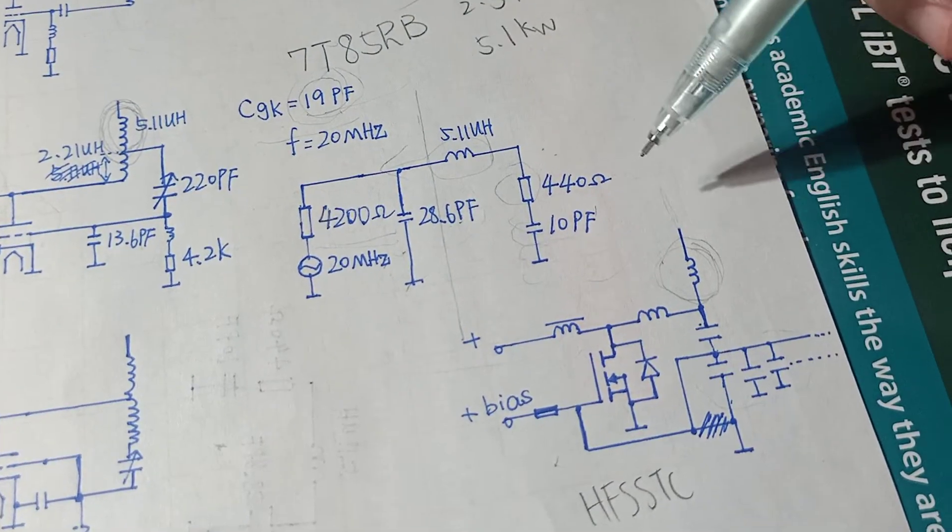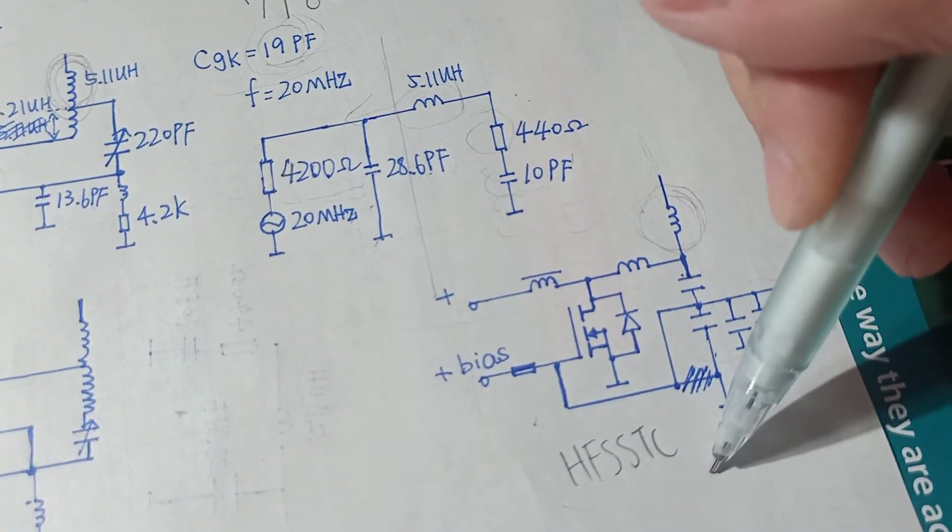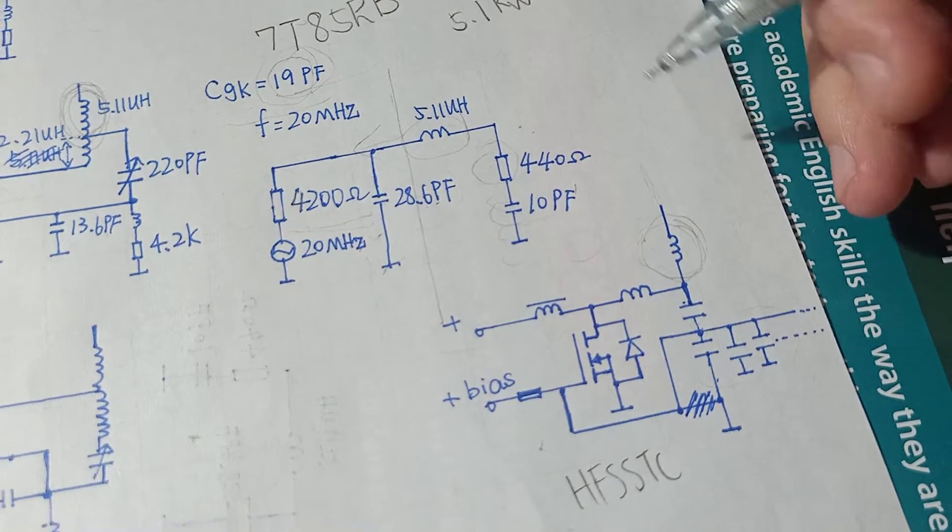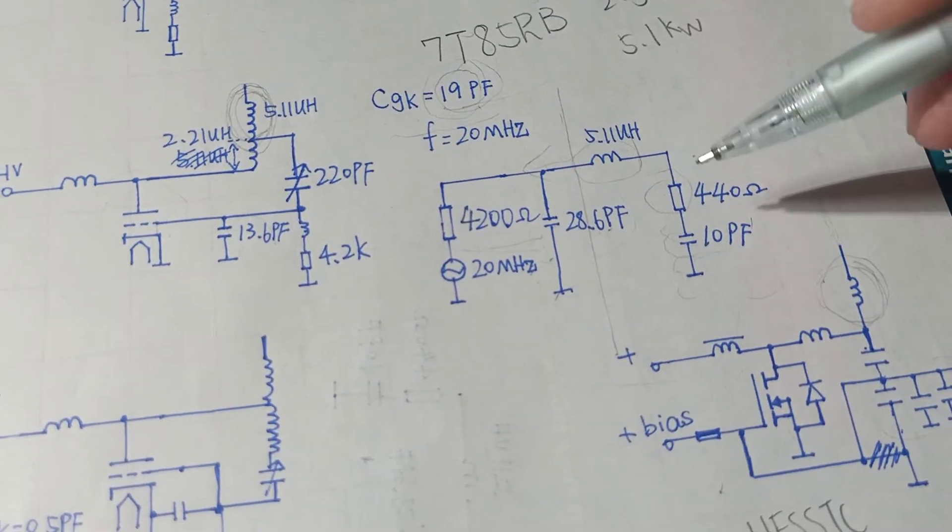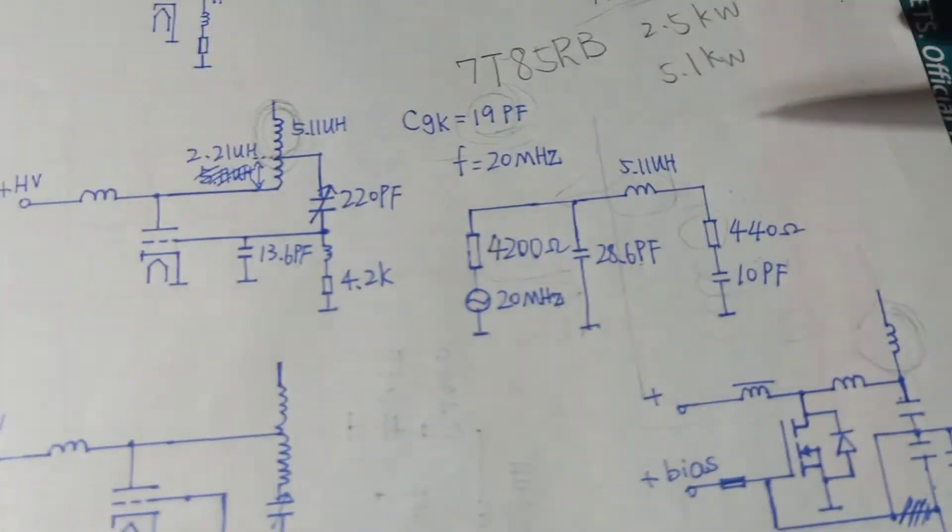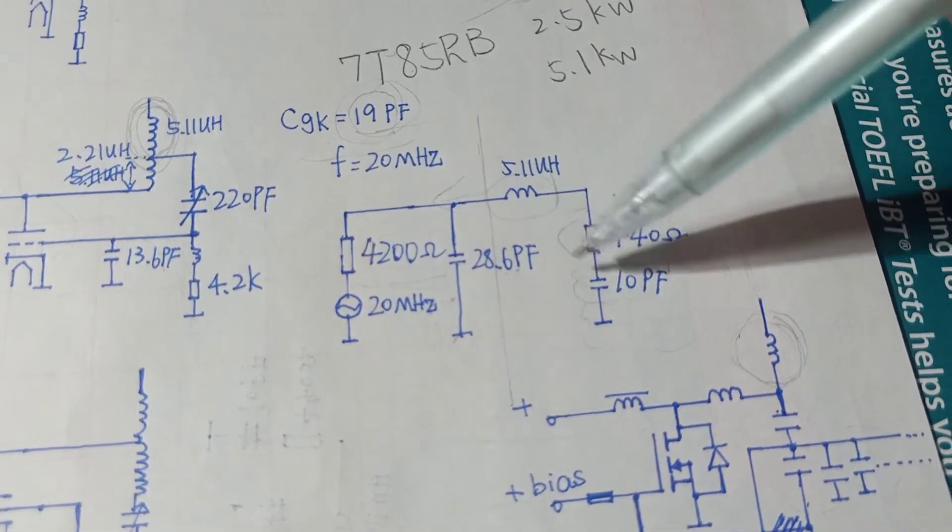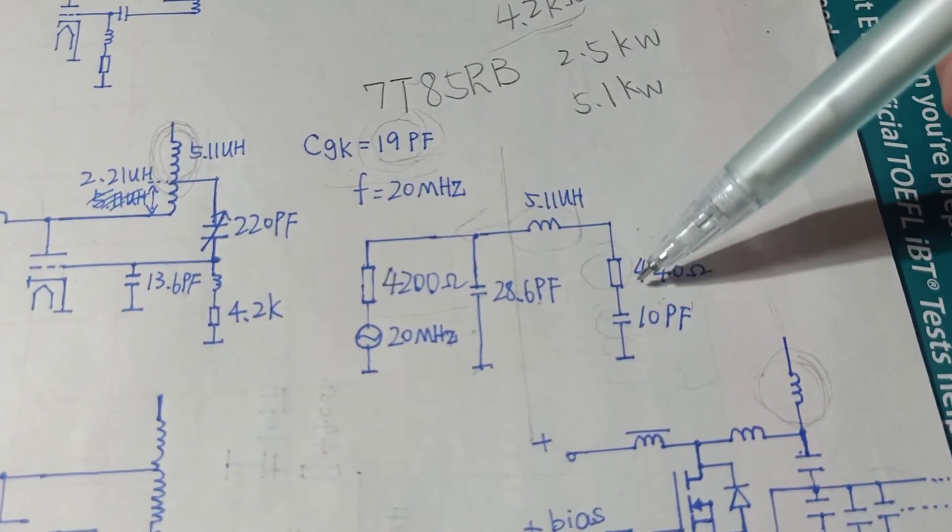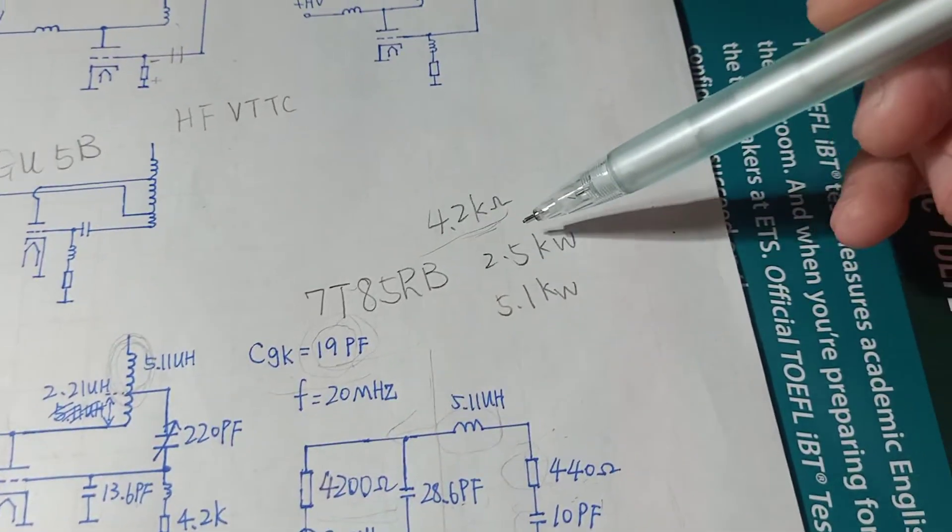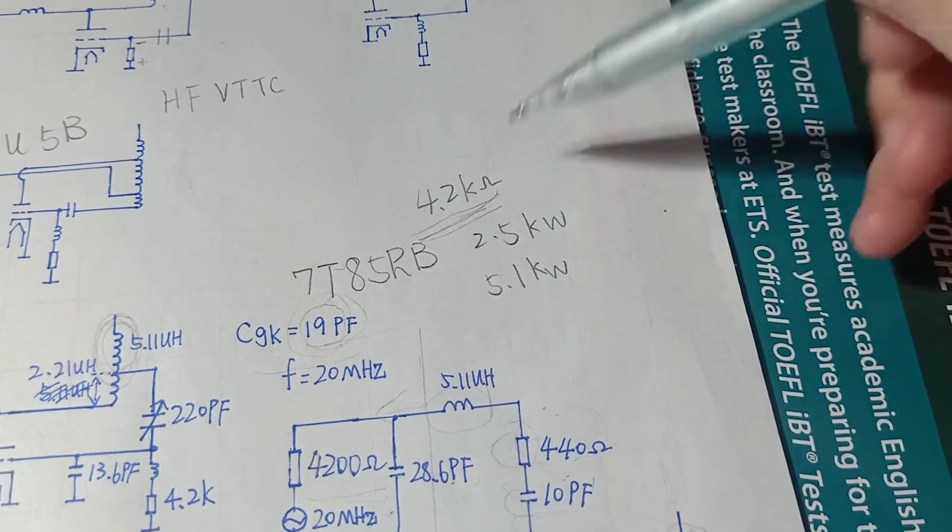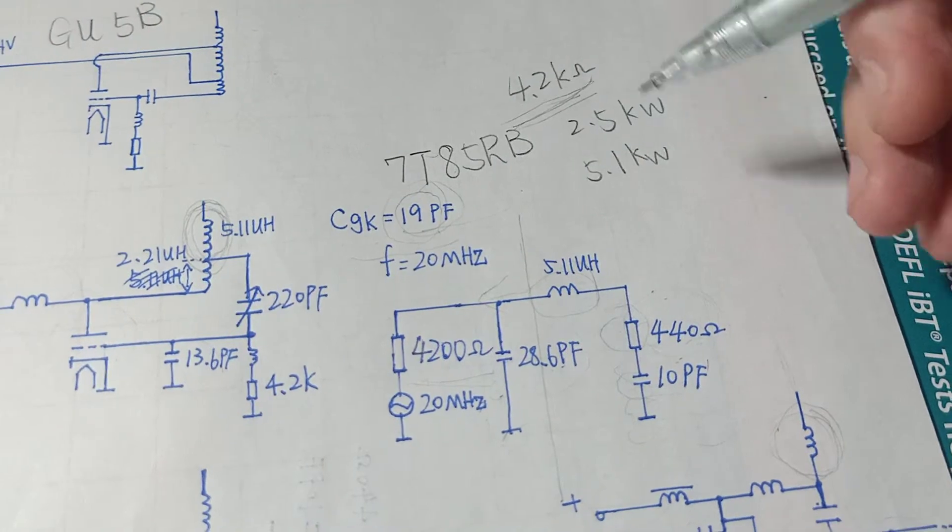He has some very nice Tesla coils. And also his HFSSTC has a power output around 3kW. You should watch that video. This value is from Steve Ward. And if you use these values,